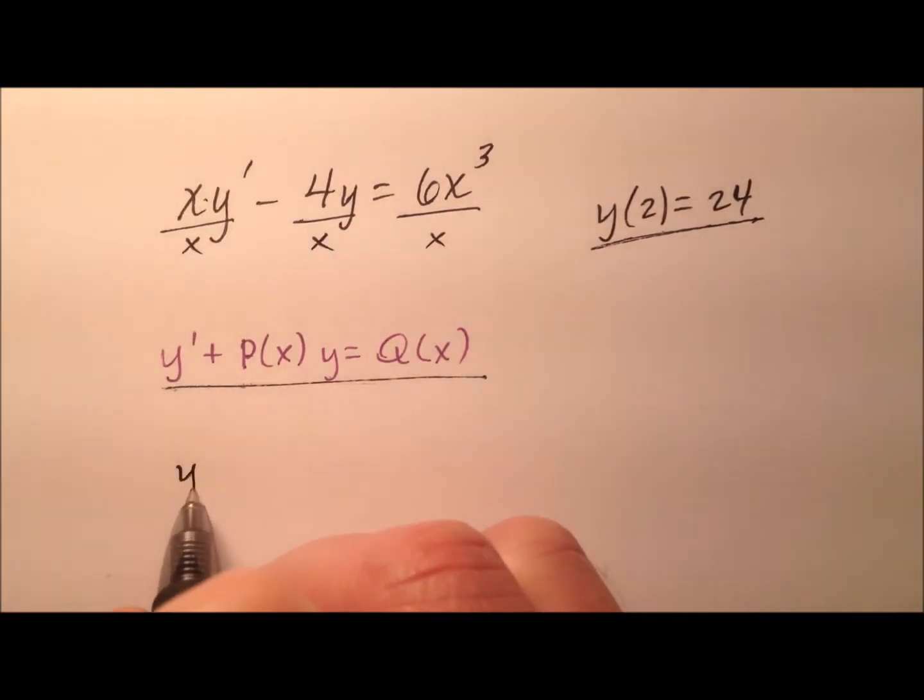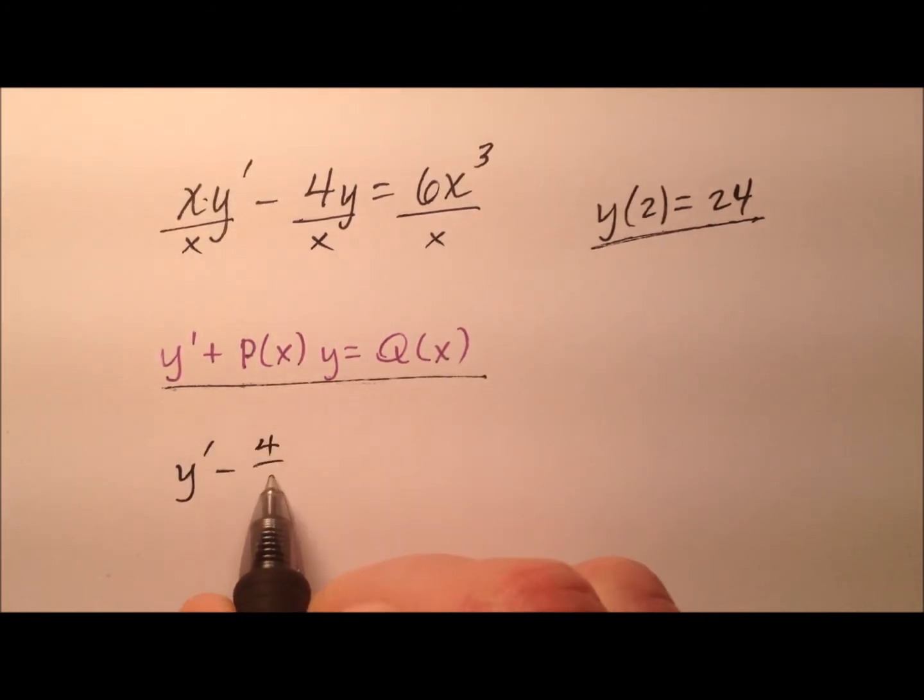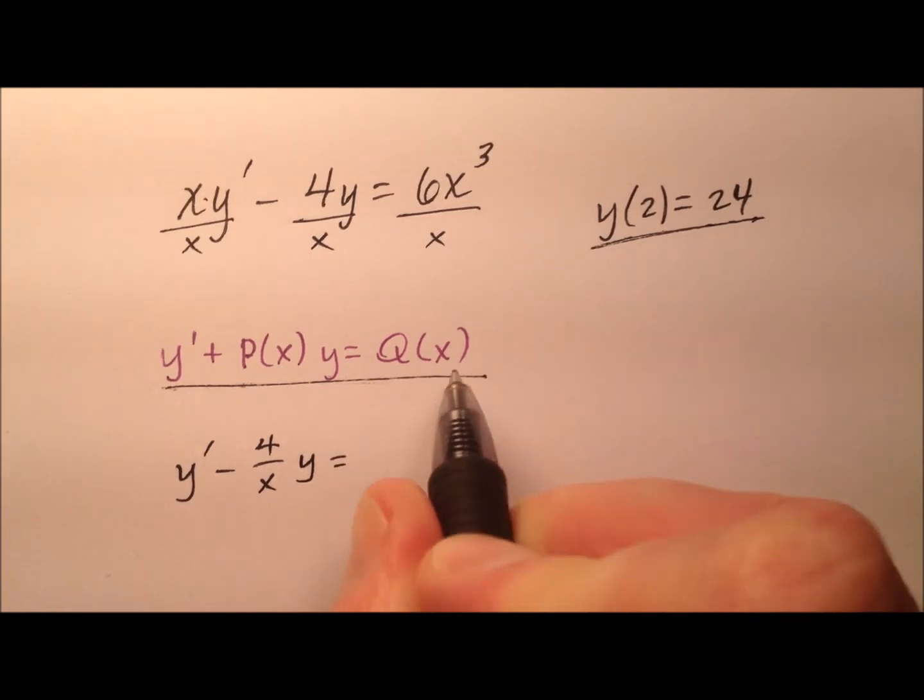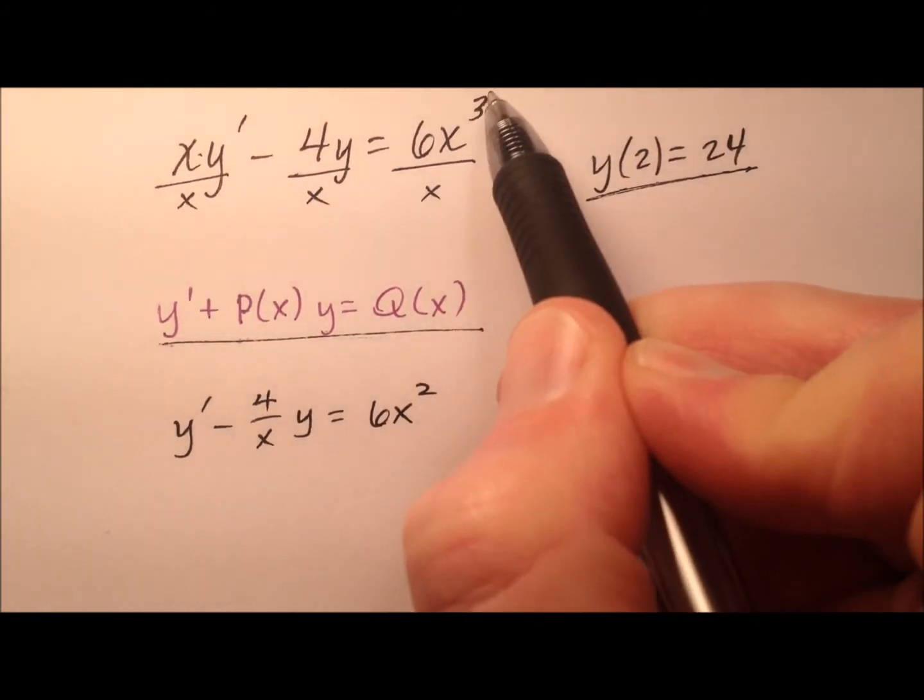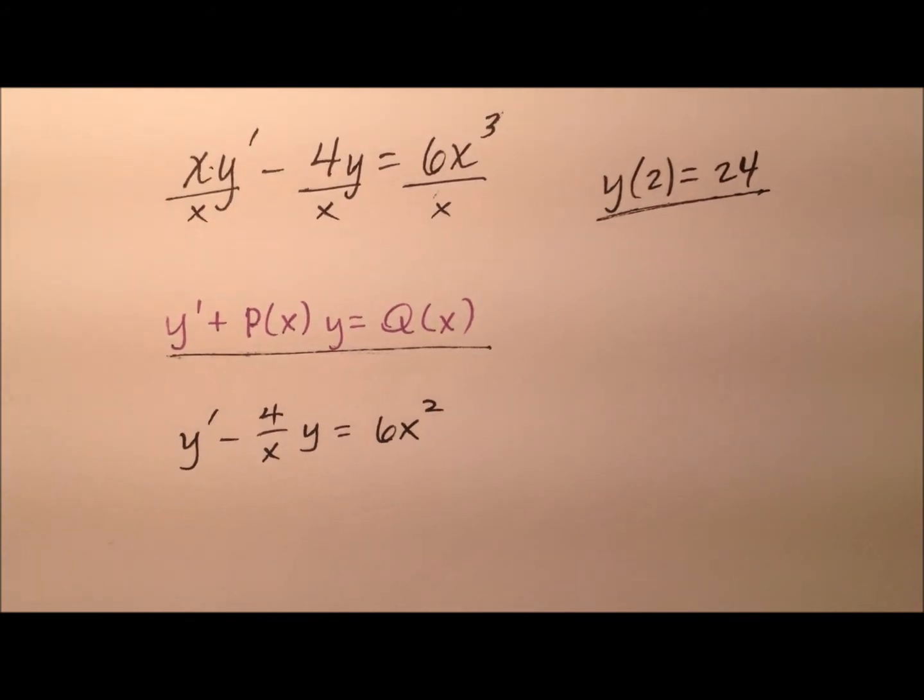So when I do that, my y prime is by itself, and then I have minus 4 over x, y equals, and it looks like 6x squared as soon as I simplify my x cubed over x.